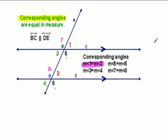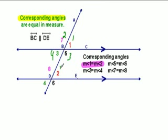When given angles with numbers that don't make sense, I like to rename them as angle 1, 2, 3, and 4 at each intersection. When your numbers match up, that means your angles match up. That's how I like to remember corresponding angles.